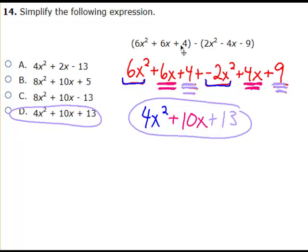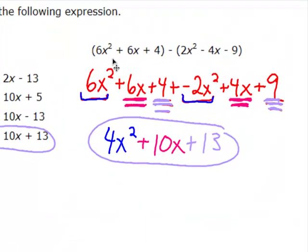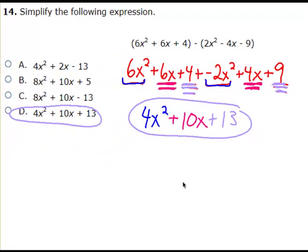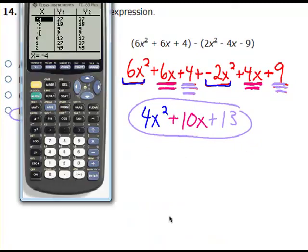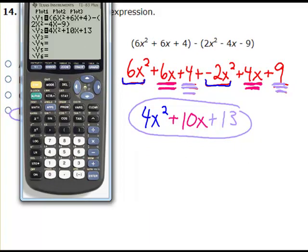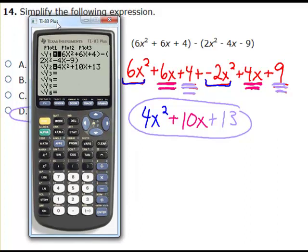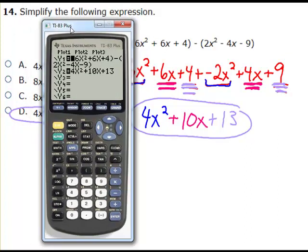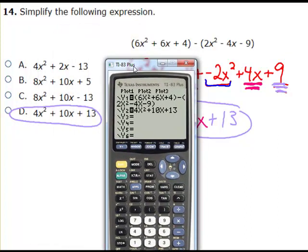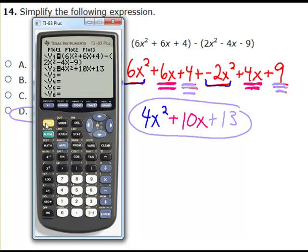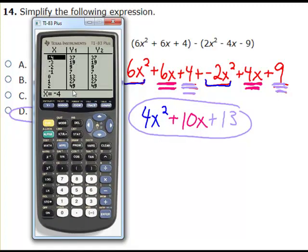Here's another problem that's easy to do on paper — a trinomial minus another trinomial. When you subtract a polynomial, you're really adding its opposite. But even this problem can be confirmed on a calculator by going to the y equals screen. Use parentheses, type in exactly what you see, compare it to what you believe your answer is — D. When you go to the table, you'll confirm that all outcomes are the same for both the original and your simplified version.